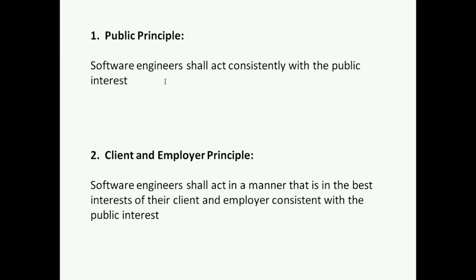When it comes to the principle about public, the summary statement is that software engineers shall act consistently with the public interest. Regarding the second principle, that of client and employer, the summary is: software engineers shall act in a manner that is in the best interests of their client and employer consistent with the public interest. As you see, there is a balance between three entities — the client, the employer, and the public, referred to as the public interest.